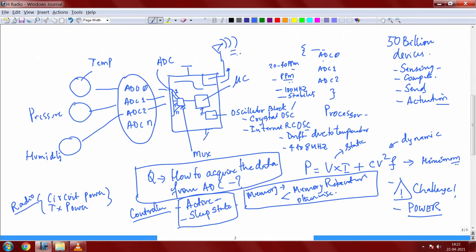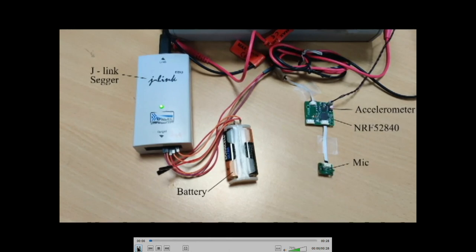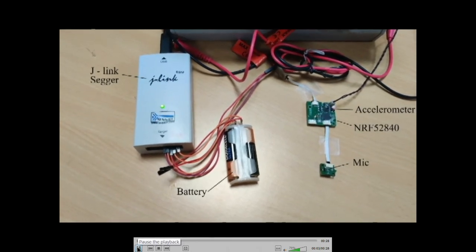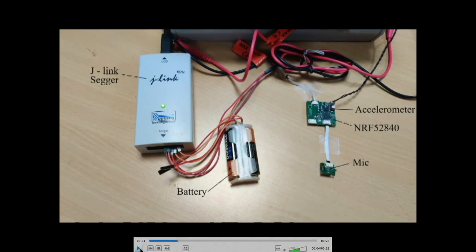It may be useful to just see a quick demo to appreciate how this whole thing is actually playing out. So let me go to the demo. We have the programming part which is essentially called J-Link SEGGER — this is the debugger which connects to a PC. You can write all the embedded C code for your application and then download it to the target board using the J-Link SEGGER.